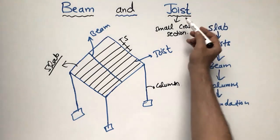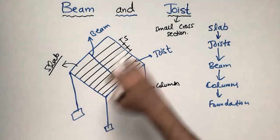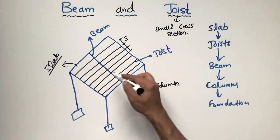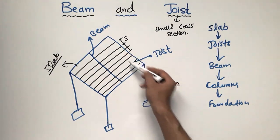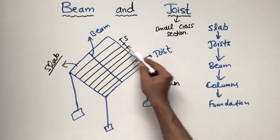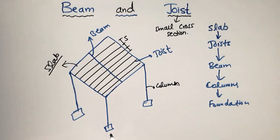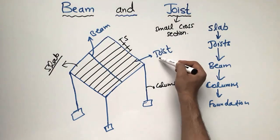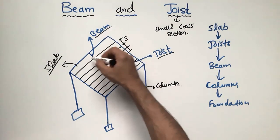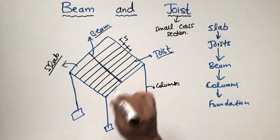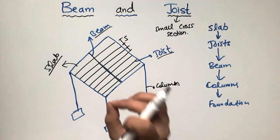So the difference is: joists are also beams but they are small in cross-section and are provided throughout the length of the slab in many numbers. You can see here there are about eight joists provided in this slab — it may depend on the design and how long the span is. After providing the joists, the load is transferred to the beam, which is a joist-like member but bigger in cross-section.